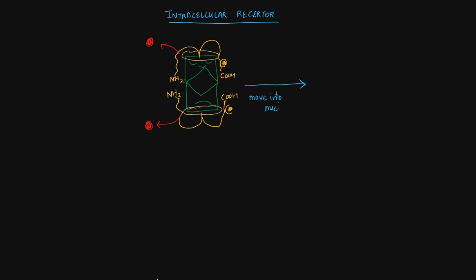At the gate of the nucleus, it finds a gatekeeper which can either be a co-activator or co-repressor, and it binds to this dimerized receptor complex.